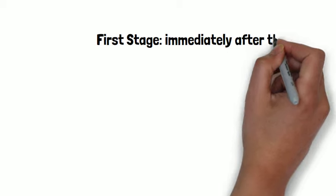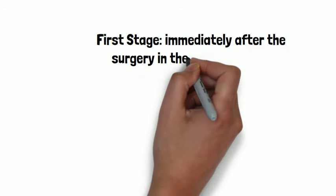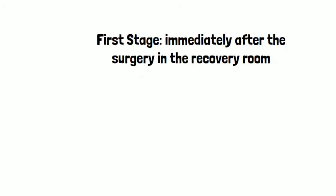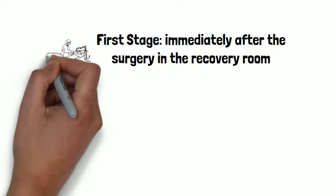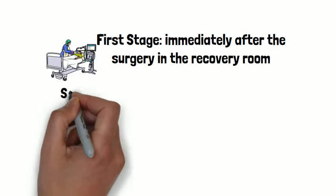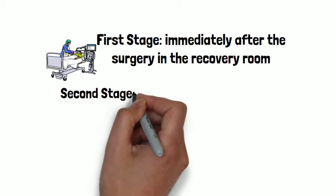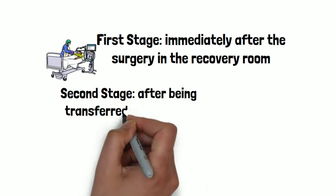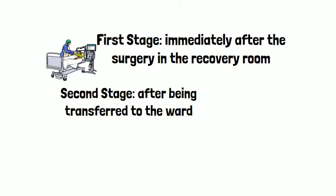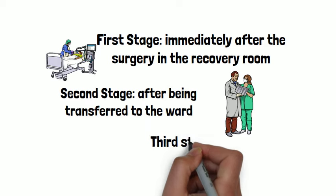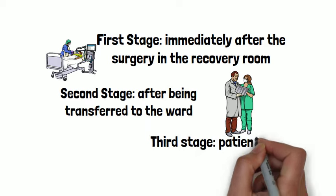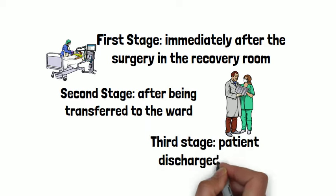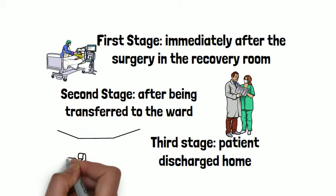Post-operative care starts as soon as the operation is completed and the patient regains consciousness after general anesthesia. Subsequently, this can be divided into three phases. The first phase is immediately following surgery in the recovery room, and the second phase is when the patient is transferred to the ward. The third phase is a defined period when the patient is recovering at home after discharge.